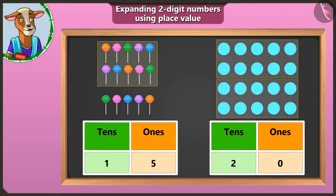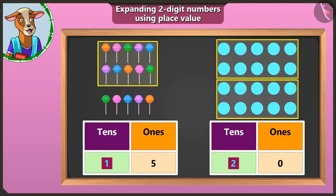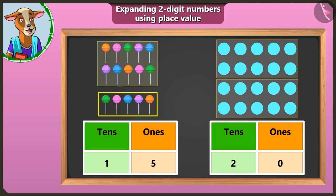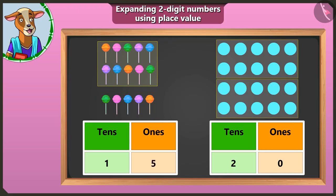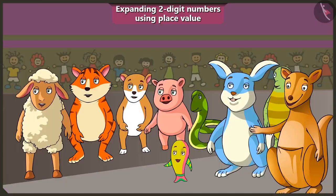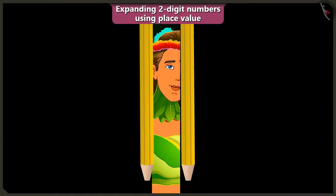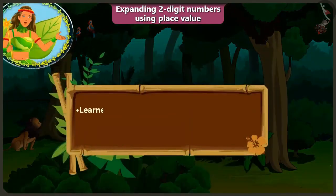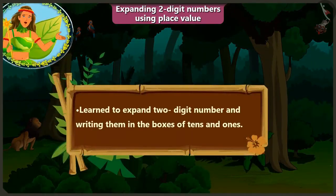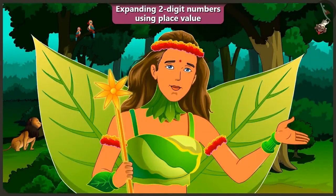So children, remember one thing. As many groups of tens are made, you have to write that number in the tens box. The remaining number will be written in the box for ones. If no number is left, then write zero in the box for ones — yes, in this manner. In this video, you have learned to expand two-digit numbers by using place value, which means writing in the box of tens and ones. In the next video, we will understand expanding two-digit numbers using place value through examples in a better way.